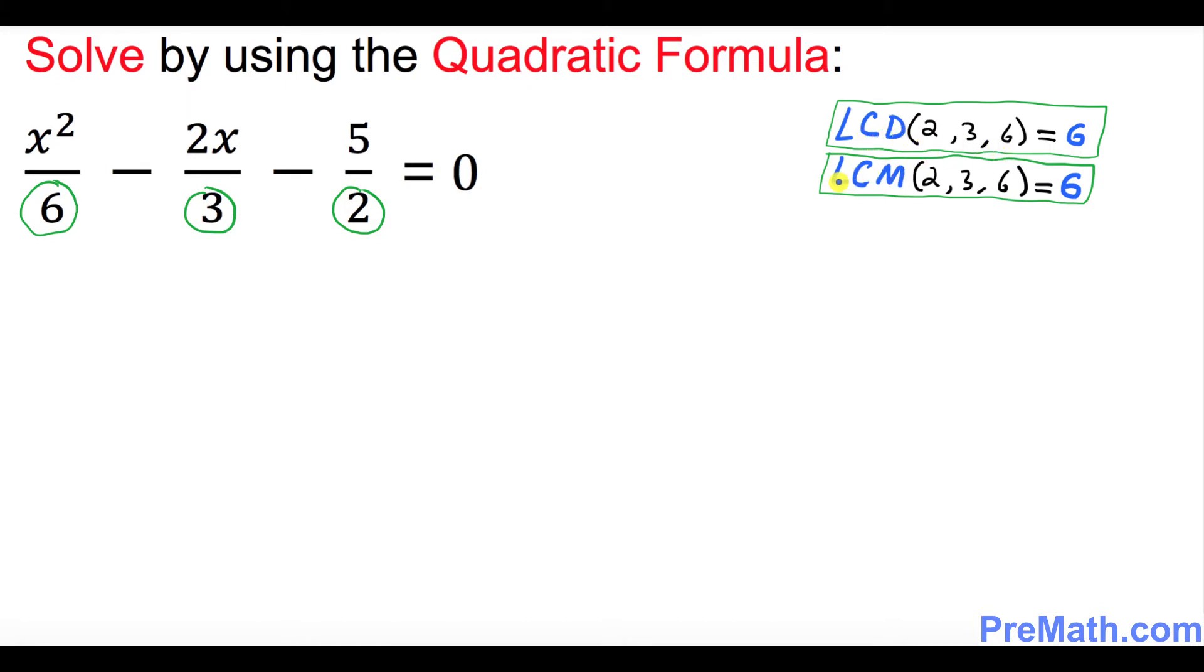Sometimes we call it LCM, least common denominator and least common multiple. So since it turns out to be a 6 as the least common denominator, we're going to multiply across the board by 6 to remove these fractions.